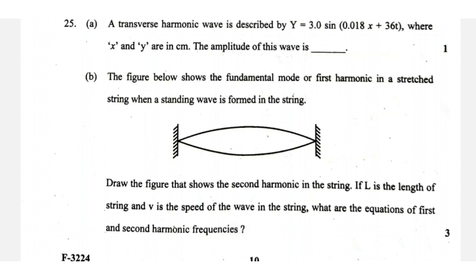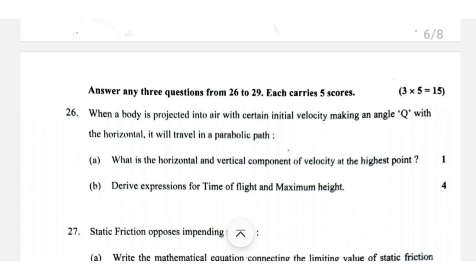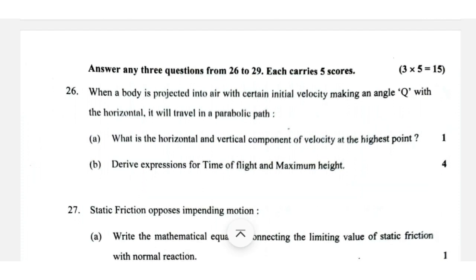Transverse wave question: the amplitude can be read from the graph. For a stretched string, the first and second harmonics: n1 equals 1 over 2L times V, where V equals root of T over mu. The second harmonic n2 equals 2n1, and the third harmonic n3 equals 3n1. The ratio n1:n2:n3 equals 1:2:3.